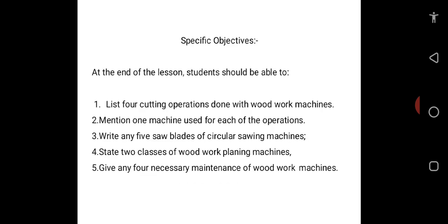The specific objectives are: one, at the end of the lesson, students should be able to list four cutting operations done with woodwork machines; two, mention one machine used for each of the operations; three, write any five saw blades of circular sawing machines; four, state two classes of woodworking or woodwork planing machines; five, give any saw necessary maintenance of woodwork machines.